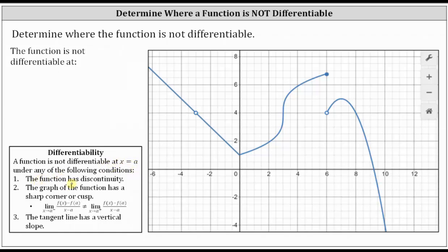Number one, the function has discontinuity at x equals a. Number two, the graph of the function has a sharp corner or a cusp at x equals a.